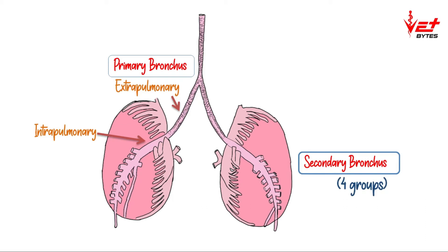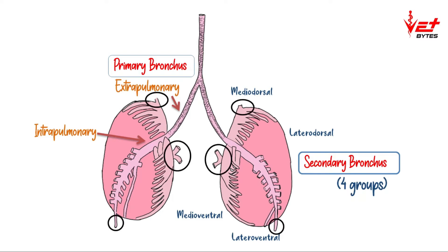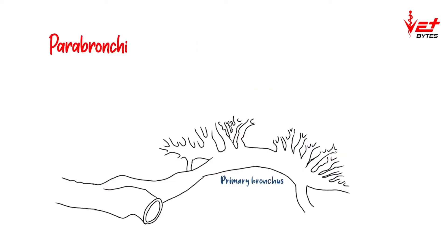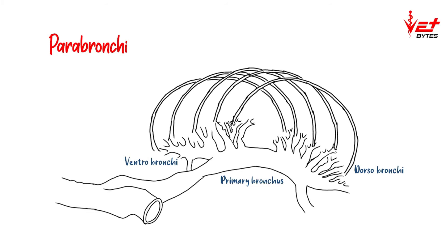The four groups of secondary bronchi are: mediodorsal, medioventral, lateral ventral, and lateral dorsal. There are certain connections to the air sacs from the lungs. So the primary bronchus divides to form secondary bronchi, and from the secondary bronchi the tertiary bronchi divide.